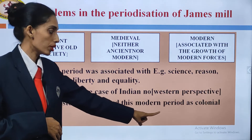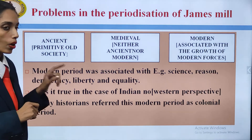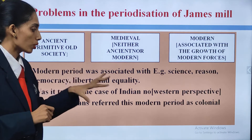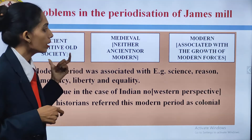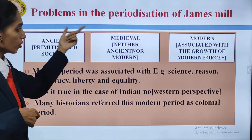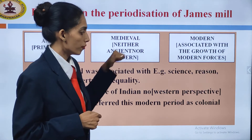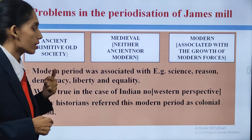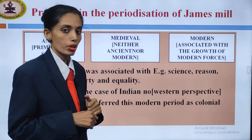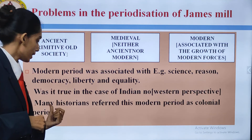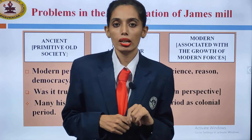Many historians refer this modern period as associated with the colonial period, not with the Indian people. This totally ignores our people — they are not mentioning anything about them, but they are mentioning about the governor generals. Our Indian historians have divided the period into three: ancient, medieval, modern. But the modern period — when they talk about the growth of modern forces, democracy, equality, science, reason — all this is from the Western perspective, not the Indian perspective. So we can say that this modern period can be termed as the colonial period.